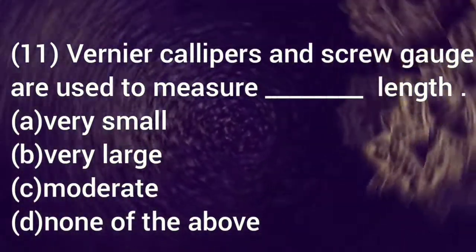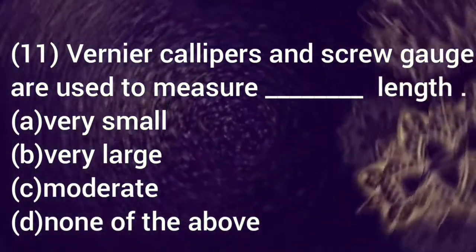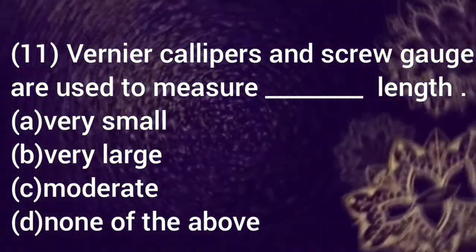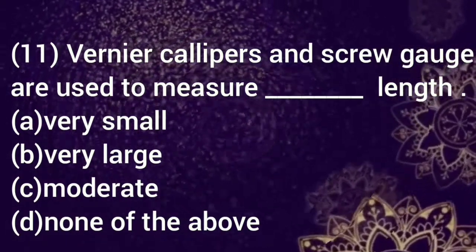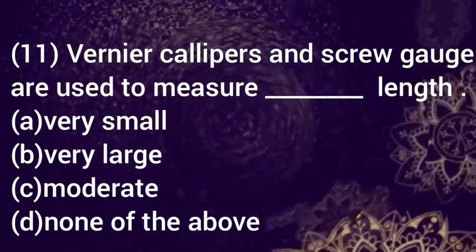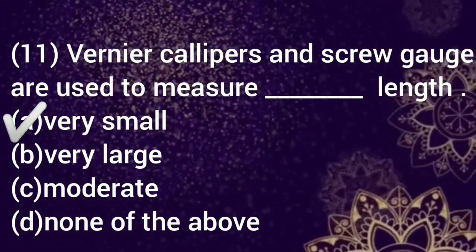Here is the next question number 11. Vernier calipers and screw gauges are used to measure dash length. Option a: very small, b: very large, c: moderate, d: none of the above. Select your answer. The correct option is a, very small.